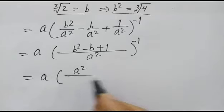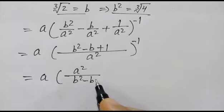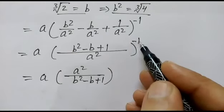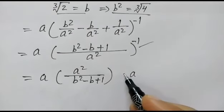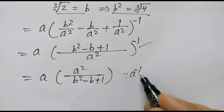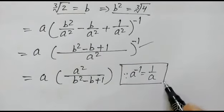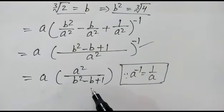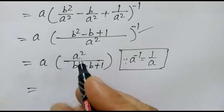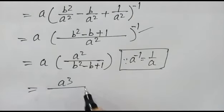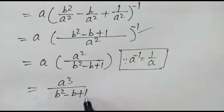In the next step, the a squared gets reversed when we remove the power of minus 1 — that is, a inverse or a to the power minus 1 equals 1 over a. So this changes, and we get a squared over b squared minus b plus 1. Then a into a squared gives a cubed over b squared minus b plus 1.